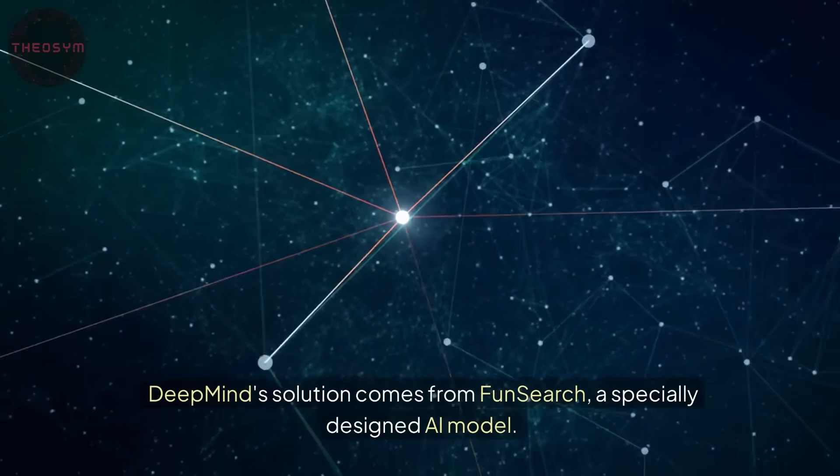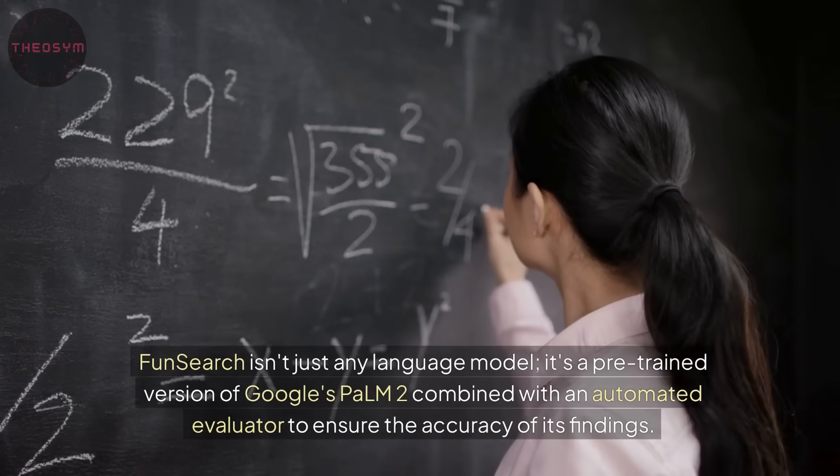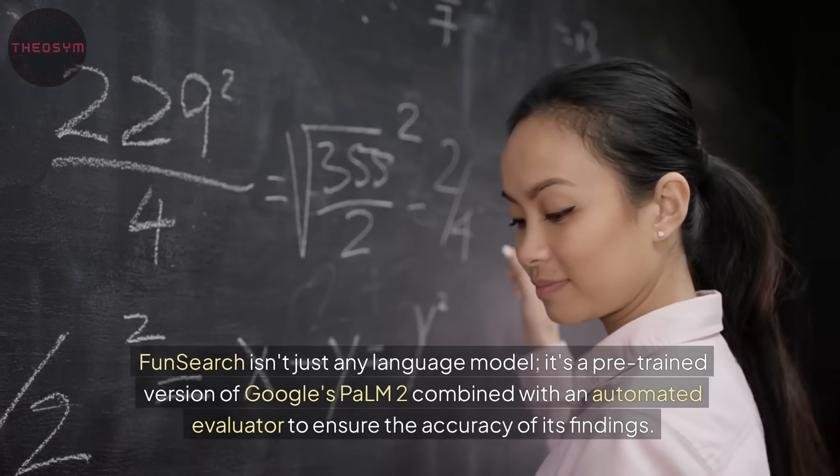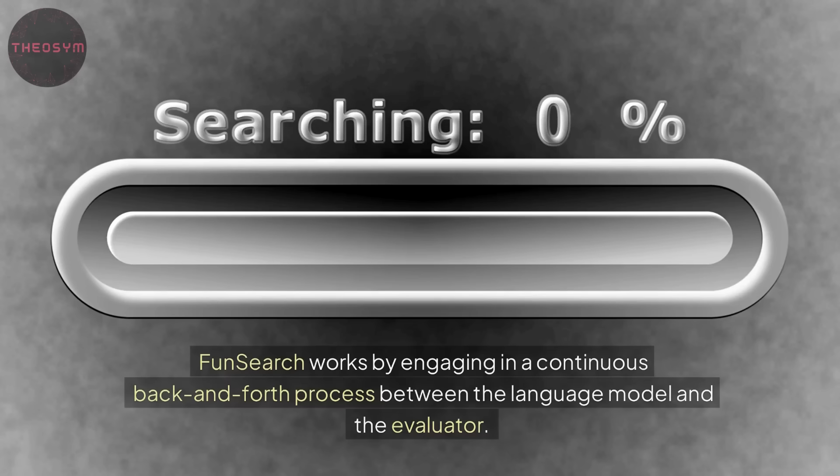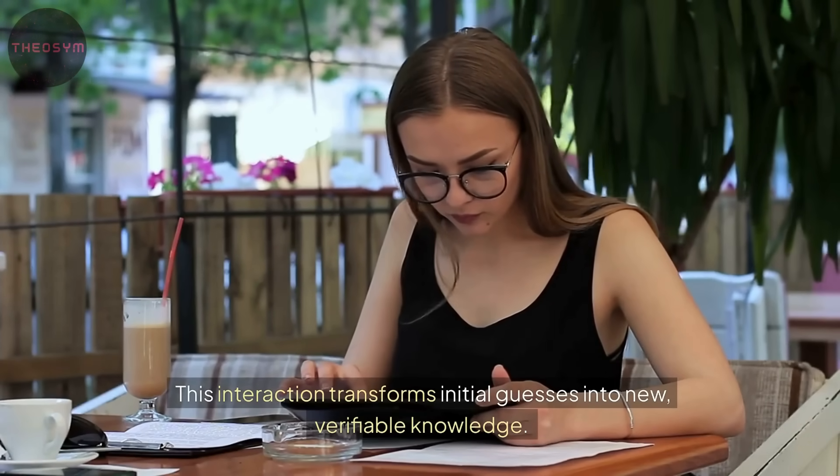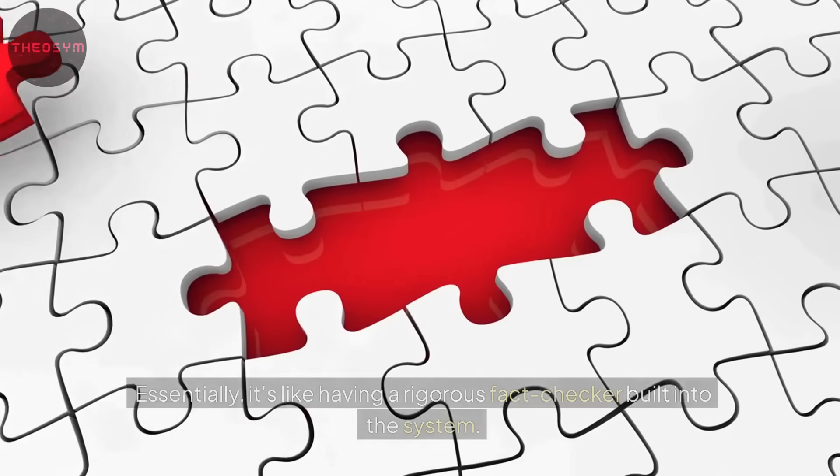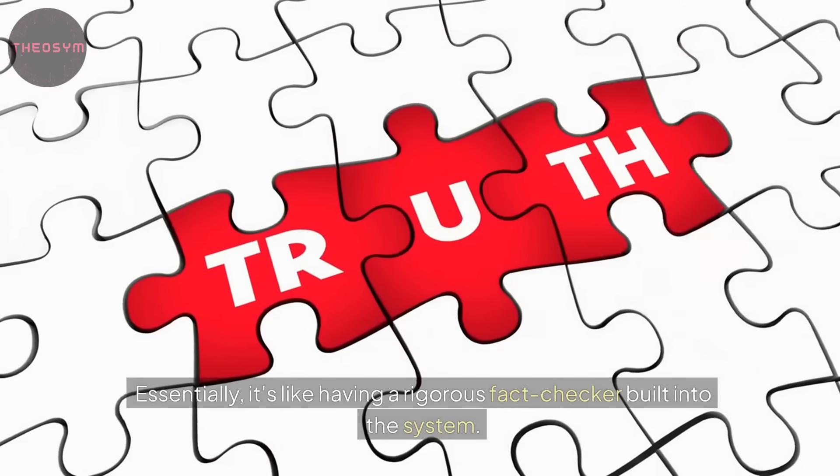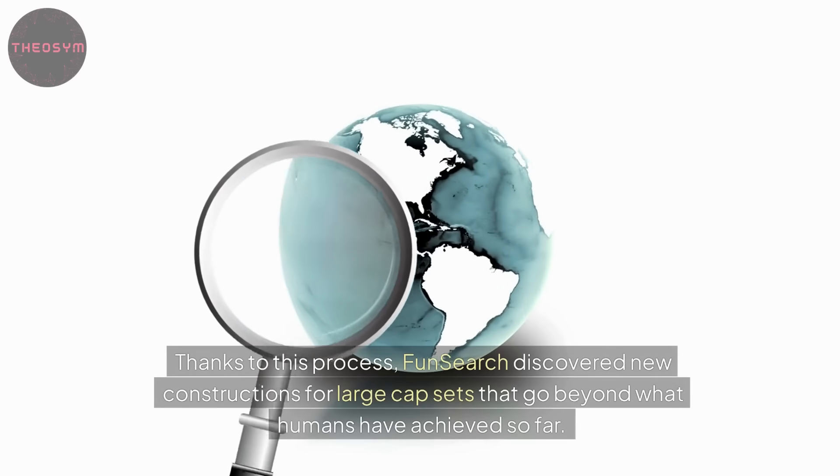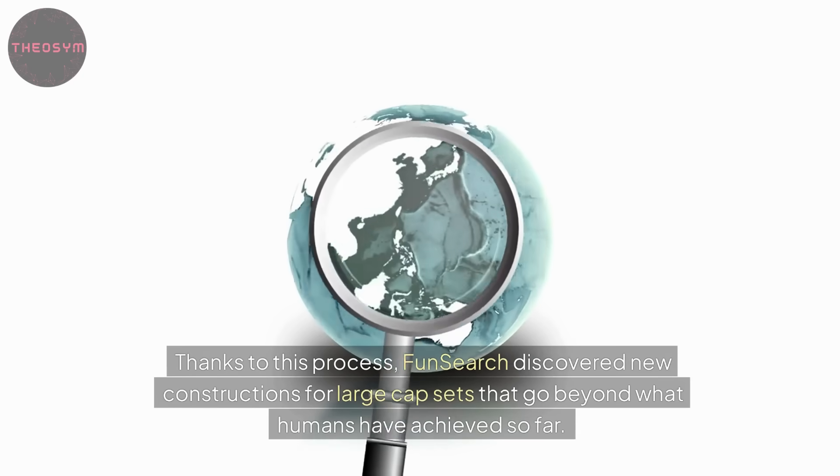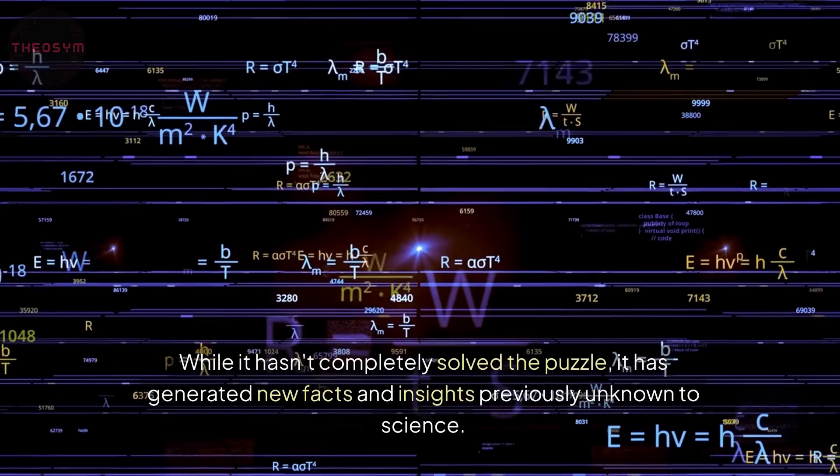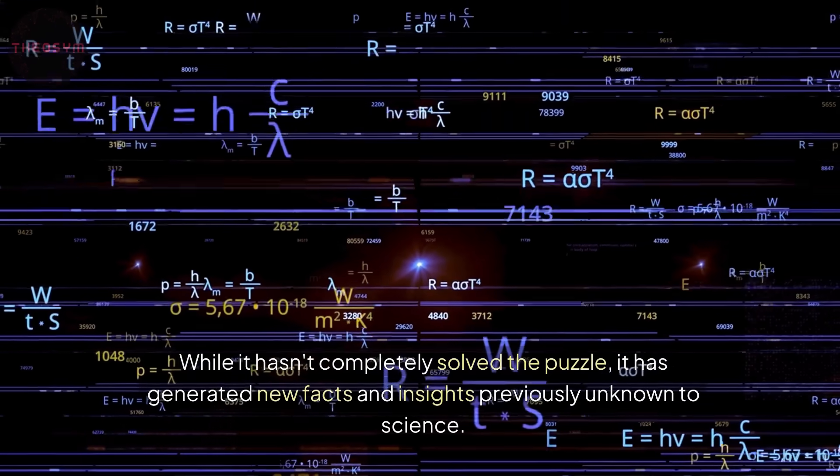DeepMind's solution comes from FunSearch, a specially designed AI model. FunSearch isn't just any language model, it's a pre-trained version of Google's PaLM 2 combined with an automated evaluator to ensure the accuracy of its findings. FunSearch works by engaging in a continuous back-and-forth process between the language model and the evaluator. This interaction transforms initial guesses into new, verifiable knowledge. Essentially, it's like having a rigorous fact-checker built into the system. Thanks to this process, FunSearch discovered new constructions for large capsets that go beyond what humans have achieved so far. While it hasn't completely solved the puzzle, it has generated new facts and insights previously unknown to science.